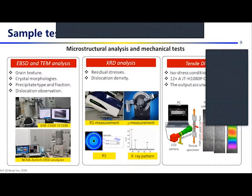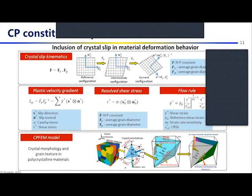For the multi-scale modeling, the crystal plasticity model includes crystal lattice rotation and crystal slip to simulate microstructure-sensitive material elastic-plastic deformation. This leads to the plastic velocity gradient and resolved shear stress on each slip system, and finally the flow rule which defines the shear strain rate at each slip system.